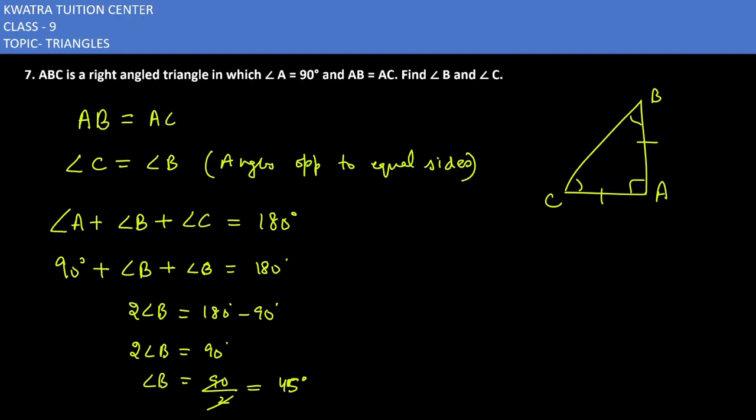So, yes, angle B is 45 degree. And what will be the measure of angle C? It would be 45 degree as well because both of them are equal in measurement. Right? So, yes, this is your 7th one.